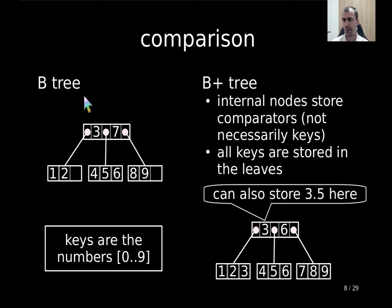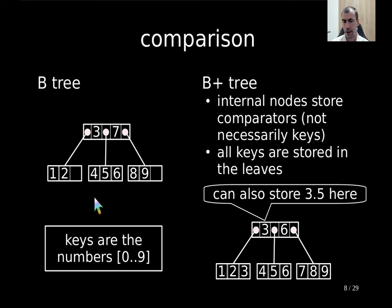For the B-tree, if there is a comparator value 3, this means all keys of at most 3 go to the left child. A comparator value 7 means all keys of at most 7 go left of that separator, so keys strictly greater than 3 but at most 7 go to the middle leaf. Therefore for the comparator you can store, for instance, 3.5 instead of 3 and it still works because 3.5 is still less than 4.